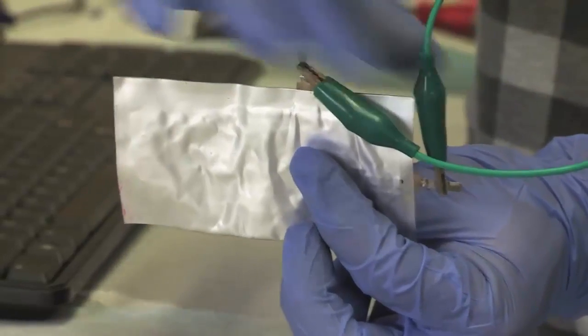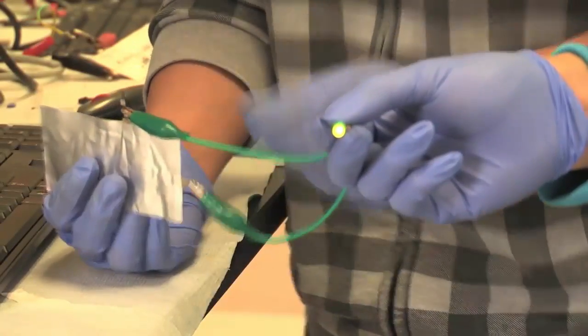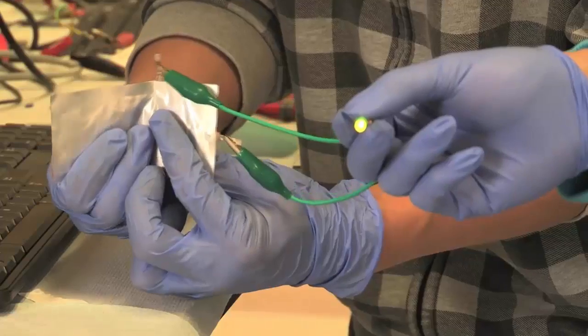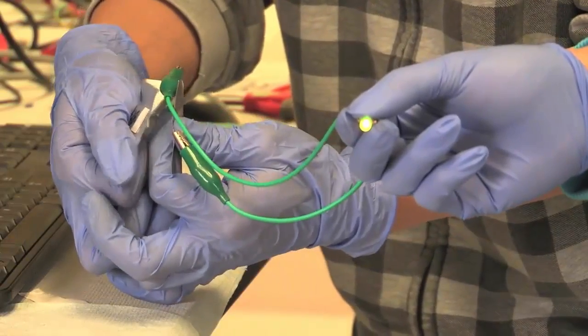This is the aluminum battery we have. It's made of aluminum and graphite. Both materials are quite cheap. Right now it's lighting up an LED light and you can bend it. You can see the LED light is still on while you're bending it.